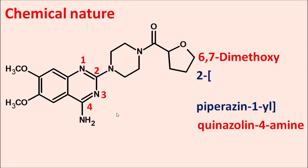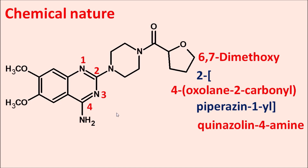To this piperazine ring at the 4th position, a carbonyl group is attached which is further attached to an oxolane ring at the second position. This side chain is written as 4-(oxolan-2-carbonyl). The complete name of Terazosin can thus be derived. The prefix 'tera' indicates it contains a tetrahydrofuran ring in the acyl chain.